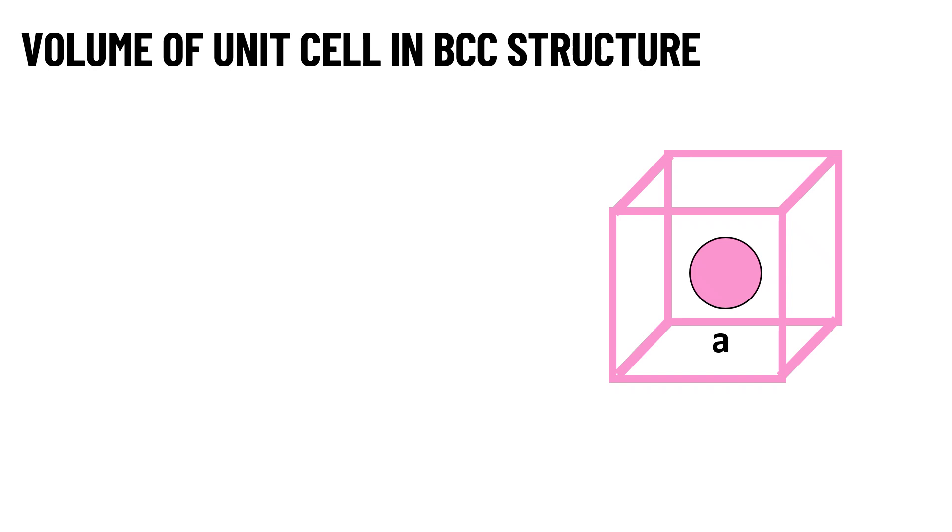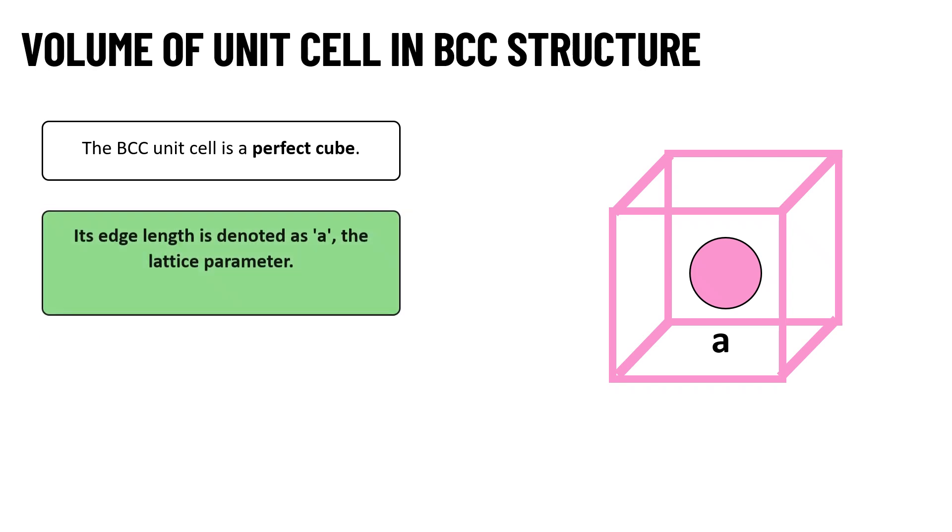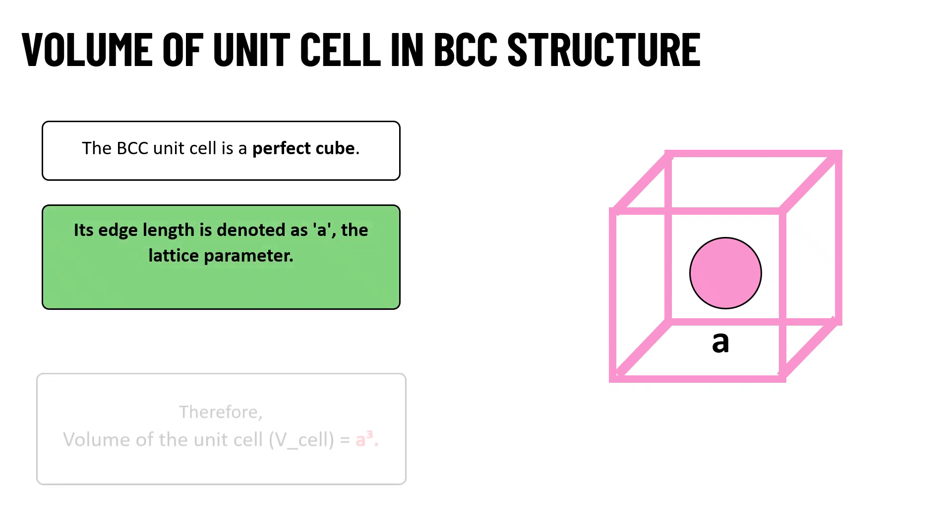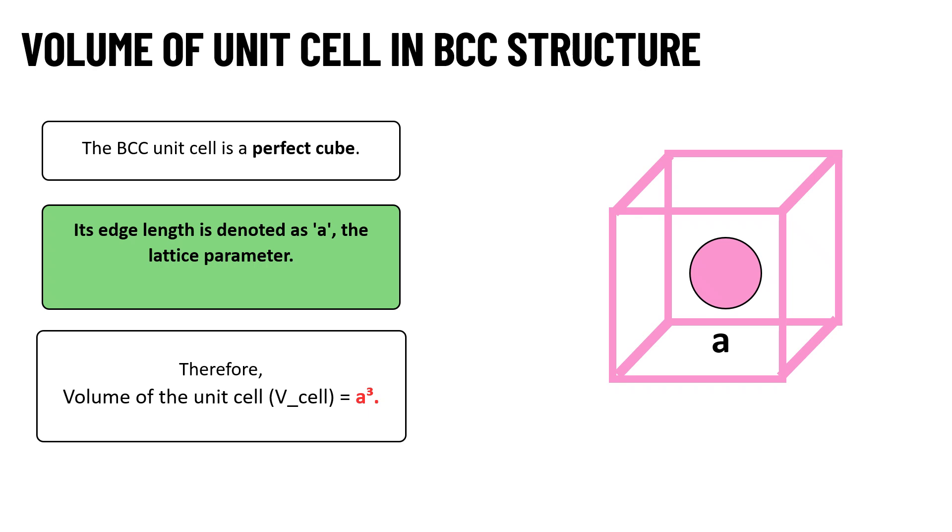Let us see what is the volume of unit cell in BCC structure. The BCC unit cell is a perfect cube which is having the edge length A and therefore we can say volume of unit cell is equal to A cube. Edge length is A and we know volume formula is L into B into H. Here L, B, H values are equal to A. Total volume of unit cell is equal to A cube.